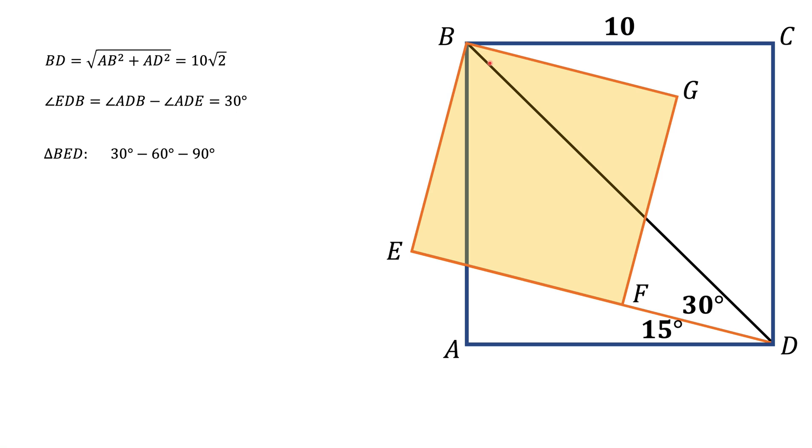In a 30-60-90 degree triangle, the side that is opposite the 30 degree angle, and that is this BE, is half of the hypotenuse BD. That means the side of the square BE is 5√2.